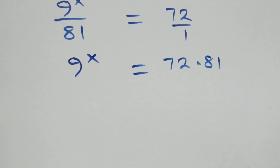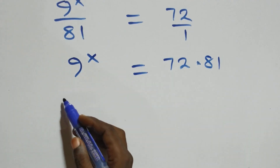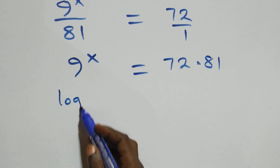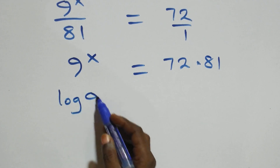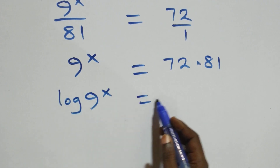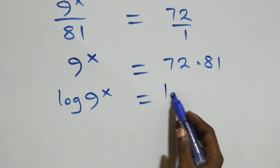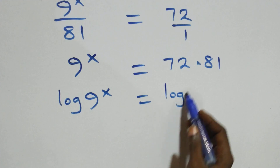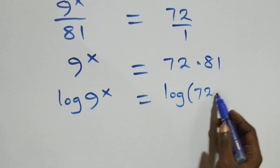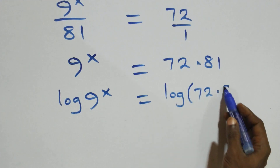We take the log on both sides and we have log 9 raised to power x equals log 72 times 81.